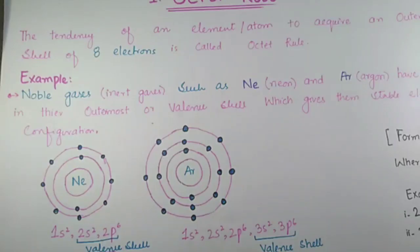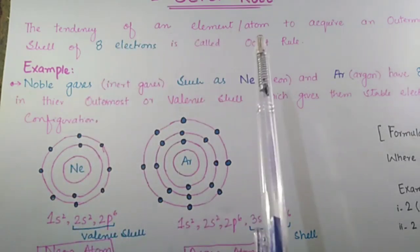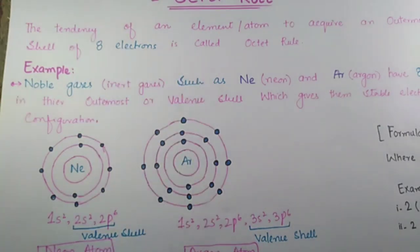Assalamu alaikum students, you are watching my channel Zawadwat Academy. Today we will cover two very important rules which we study in chemistry: the octet and the duplet rule. Starting with the octet rule, it is the tendency of an element atom to acquire an outermost shell of eight electrons.